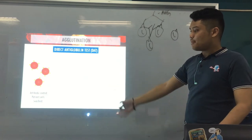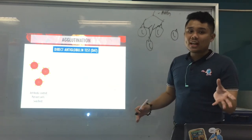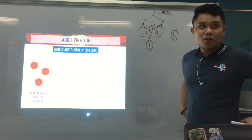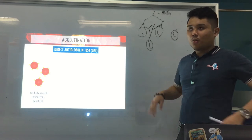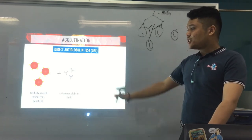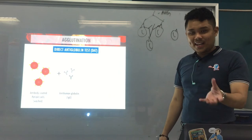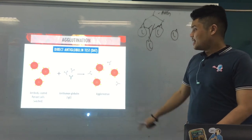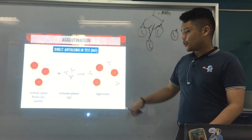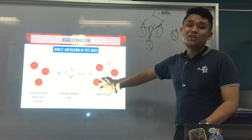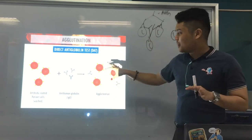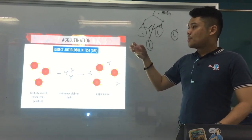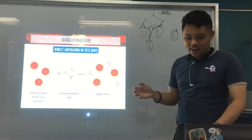Here's an illustration: antibody-coated patient cells are washed — we don't want any unbound antibodies that could interfere with the test. After washing, you add the AHG, which binds to the Fc portion of the antibodies on the RBCs. Together, they now create an agglutination — they form a lattice.